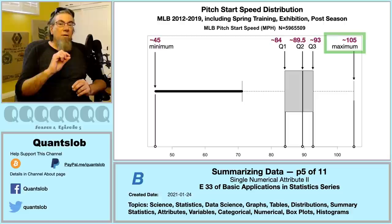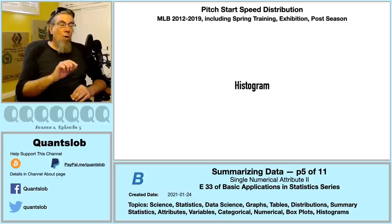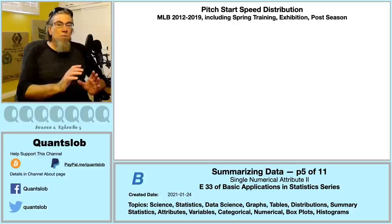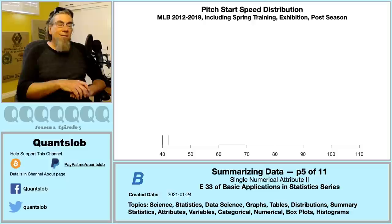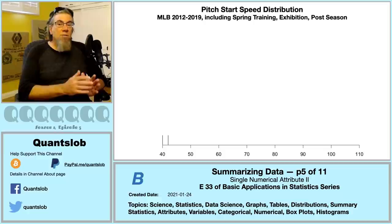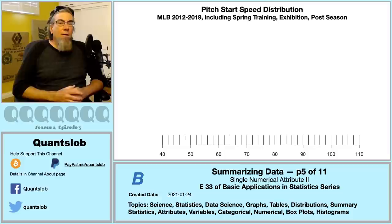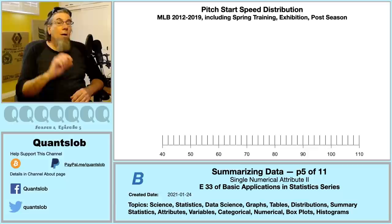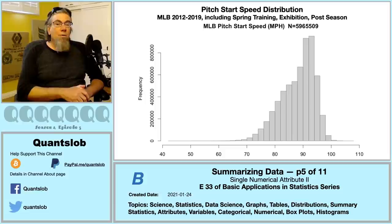Another very popular graphical way to convey popularity of values is the histogram. We borrow the same x-axis from our box plot. A histogram divides the domain into contiguous bins of equal width. Let's place the left edge of the leftmost bin at 40 and the right edge at 42 — bin width of 2 miles per hour. Since the bins are contiguous and of equal width, the placement of any one bin determines the location of all others. The histogram places a bar over each bin, and the height of the bar indicates the popularity of values within each bin — here using frequency.